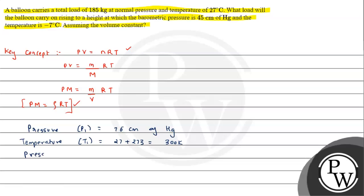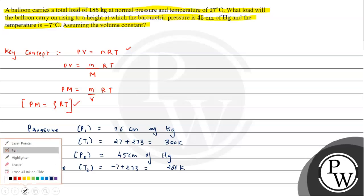Similarly, we will calculate for the new conditions. Pressure, let's say P2, is given as 45 cm of Hg. Temperature T2 is given as minus 7 plus 273, and it will correspond to 266 Kelvin.